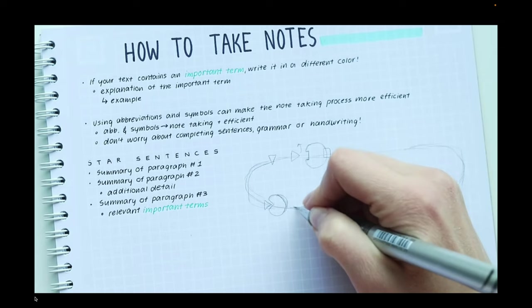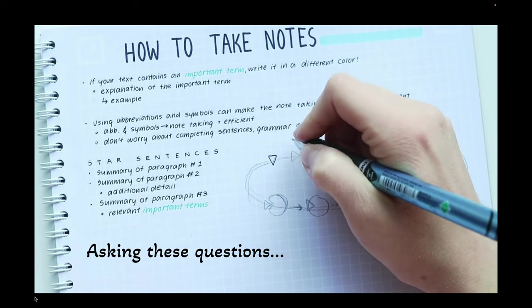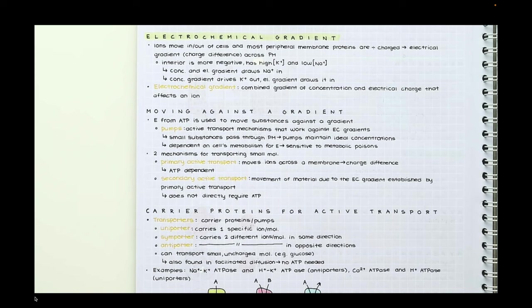This can be done by using a technique called the five W's and H, which stands for who, what, where, when, why, and how. By asking these questions, you'll be able to identify the important information.